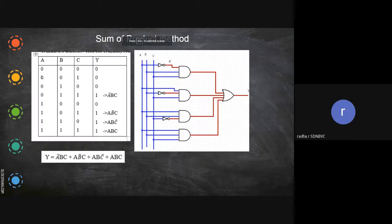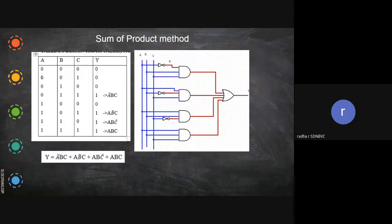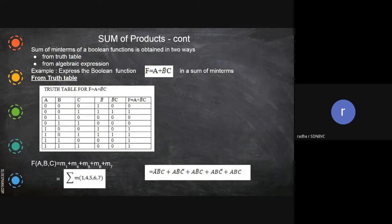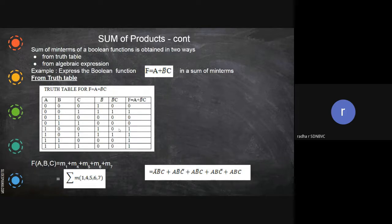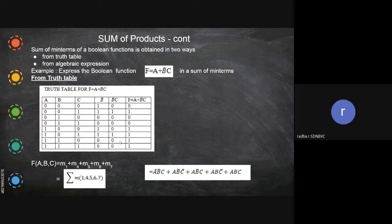From the truth table you write the expression, and for that expression you draw the diagram. When we write the Sum of Products, we write it as min terms and add all those things — that is what we call the sum of min terms. Now the next example: express the Boolean function f = a + b̄c. From this equation we are going to draw the truth table — the reverse of what we did previously. Previously we drew the truth table and from that we returned the expression; now the equation is given and we form the truth table from it.